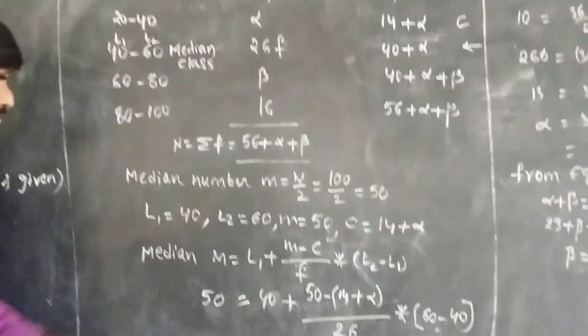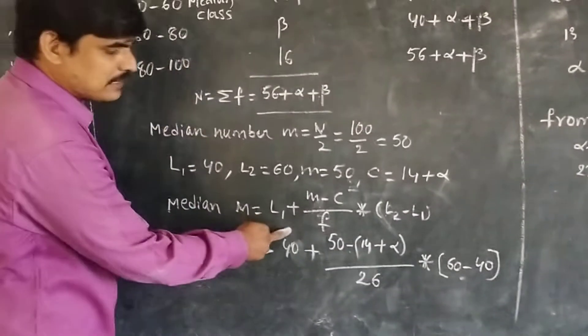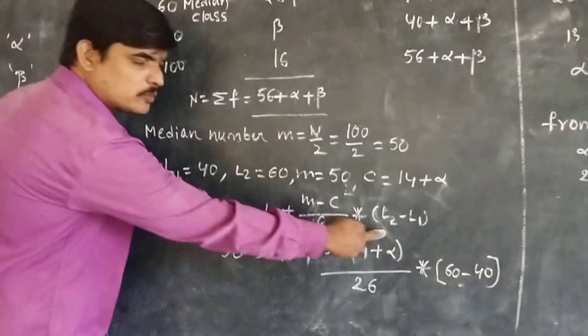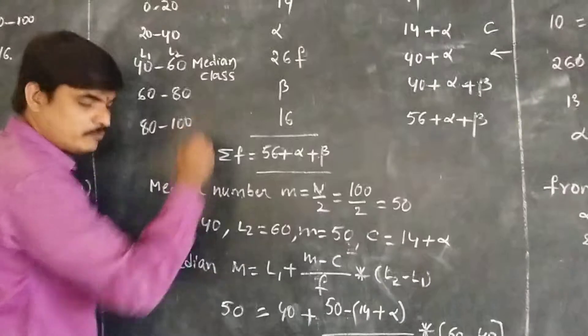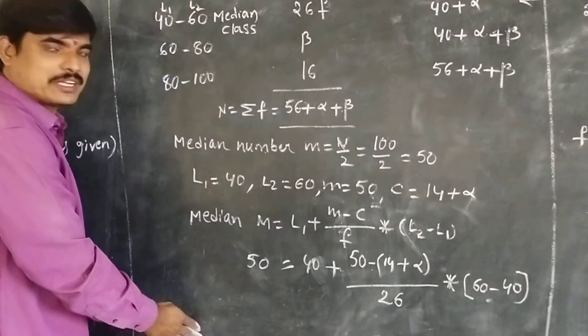The formula is M equals L1 plus M minus C by F into L2 minus L1. We know all the values from this table, so just substitute those values in this equation.